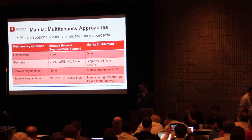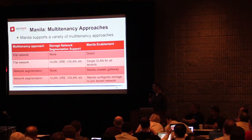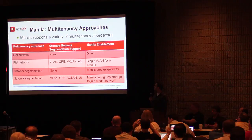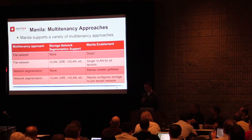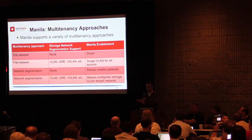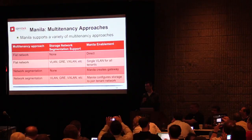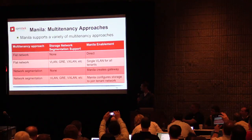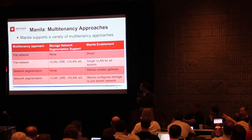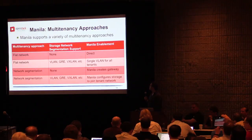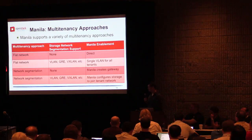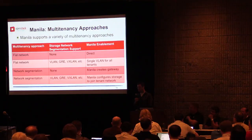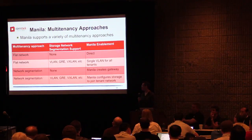While the architecture of Manila is very similar to Cinder, the main difference is the fact that it cares very much about multi-tenancy and networking. Because it's providing the share all the way from the storage backend through to the guest network, it matters what type of multi-tenancy abstraction you're using within OpenStack. OpenStack supports flat networking or segmented networking, either through VLANs, GRE tunnels, VXLANs, etc. And Manila also has to deal with the fact that while some storage backends have native support for multi-tenancy, not all of them do, so Manila has mechanisms to help other backends also support multi-tenancy.